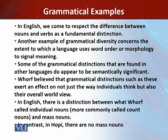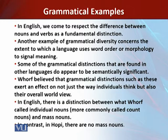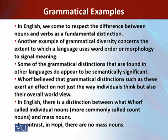Worf believed that grammatical distinctions can shape not just the way individuals think but also their overall world view. In English, there is a distinction between what Worf called individual nouns — more commonly called count nouns — and mass nouns. Count nouns refer to bodies with definite outlines, for example a tree, a stick, a hill, whereas mass nouns refer to objects without clear boundaries, for example air, water, rain. The distinction is that count nouns take the plural morpheme, whereas mass nouns cannot.